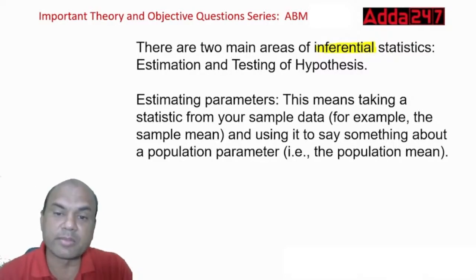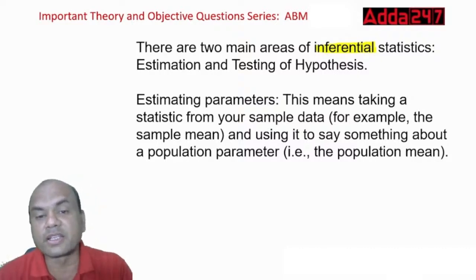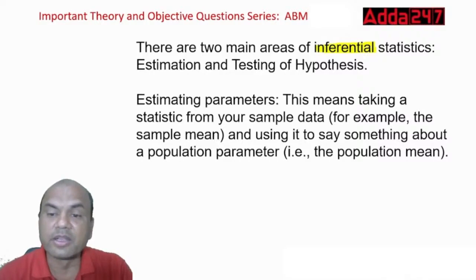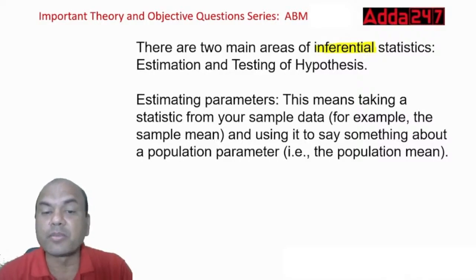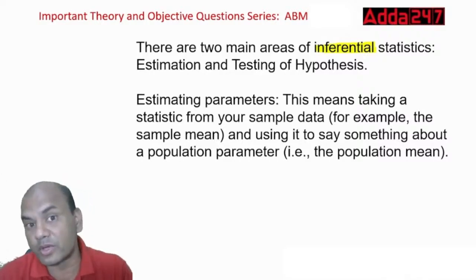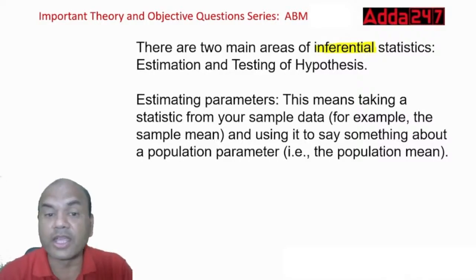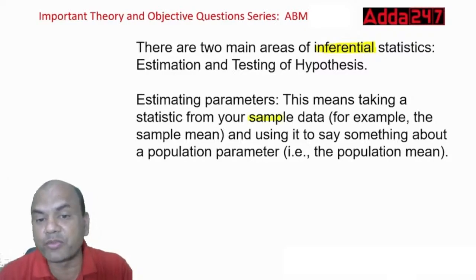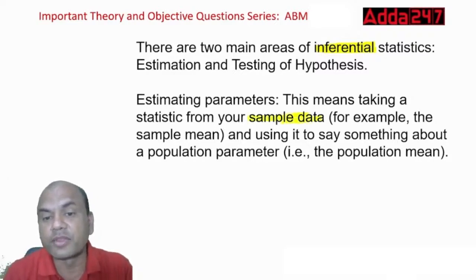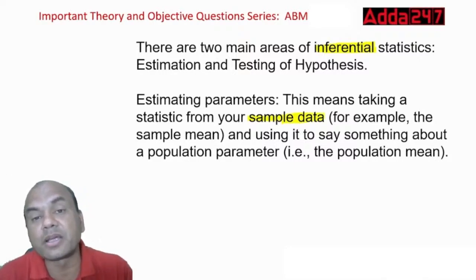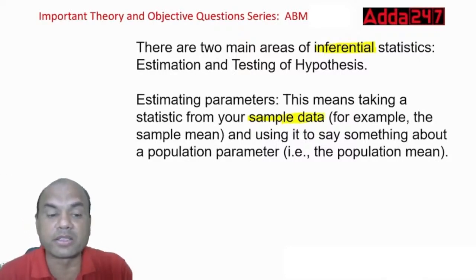Estimating parameters means taking a statistic from your sample data and using it to say something about the population parameter. Taking the statistic from your sample data — something which you have already collected — and using it to estimate something about the population.